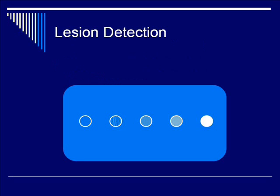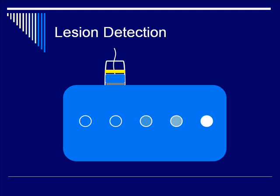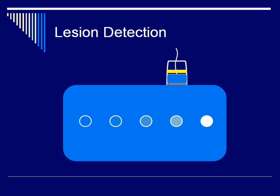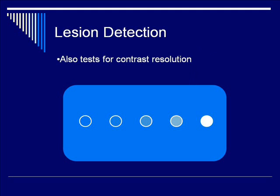The final B-mode phantom to discuss today is a lesion detection phantom. These generally consist of discrete targets of differing sizes, shapes, or echogenicities distributed in typical ultrasound phantom gel. These targets can be hyperechoic, anechoic, or hypoechoic. Because you can resolve these lesions from the rest of the ultrasound gel due to their contrast with the surrounding medium, this is also a type of test for contrast resolution.